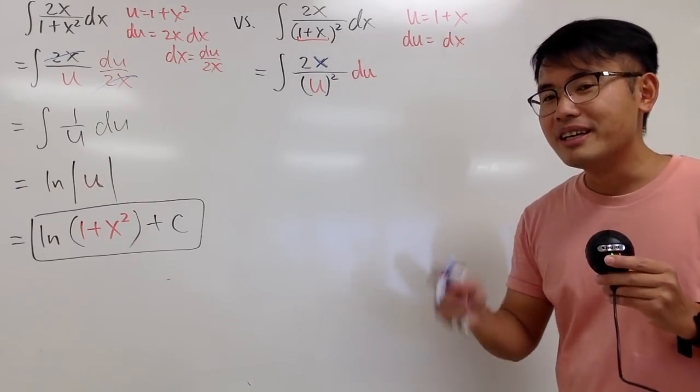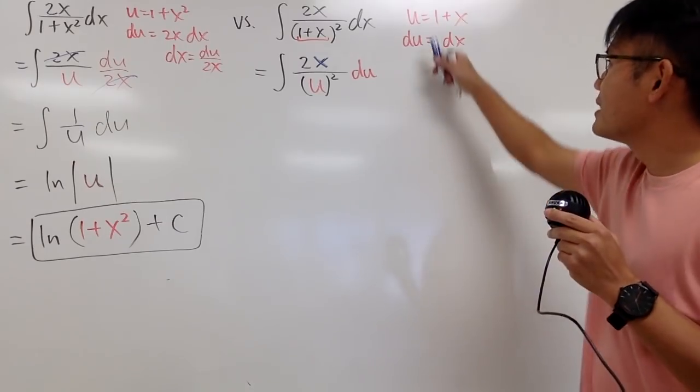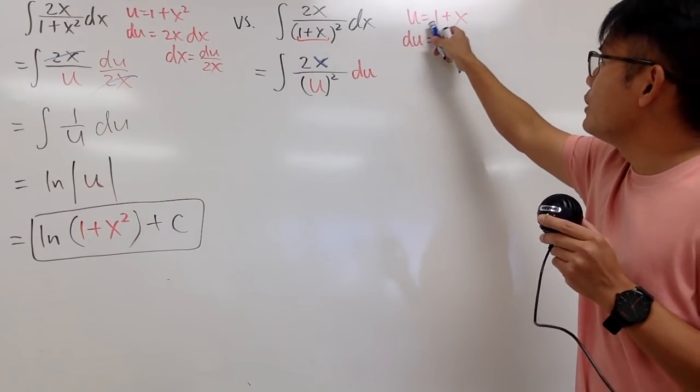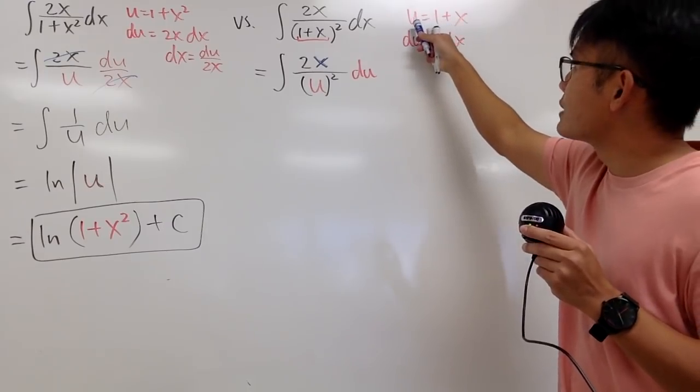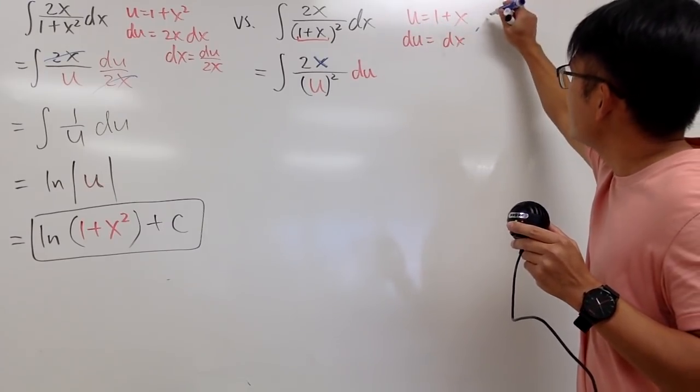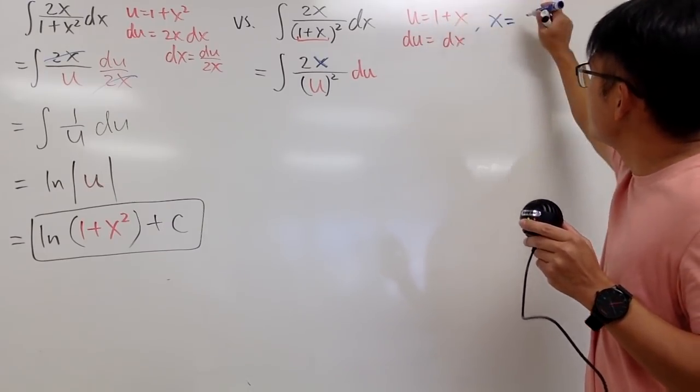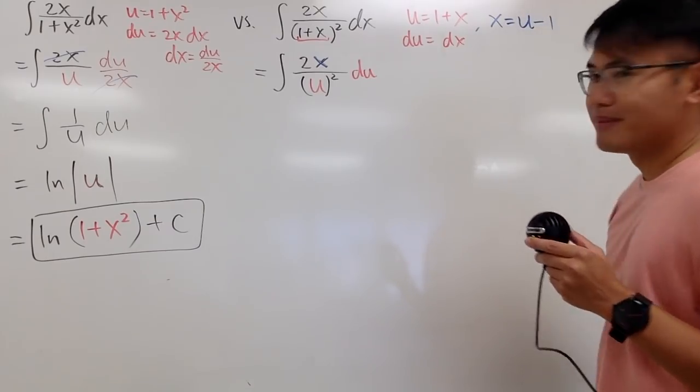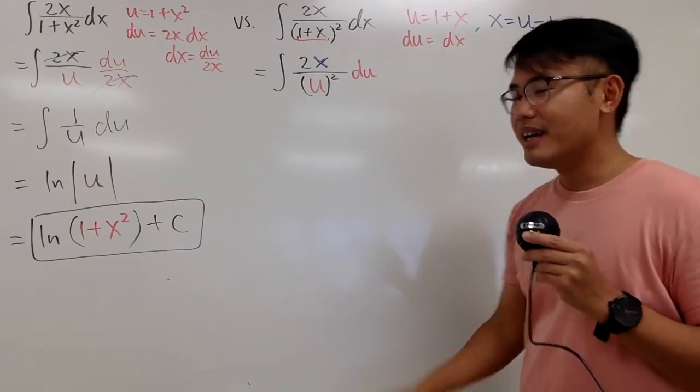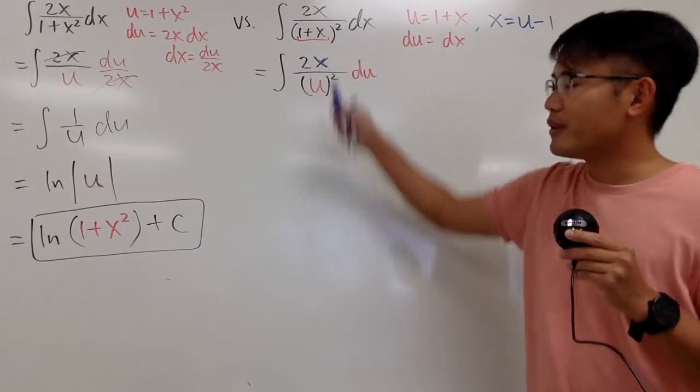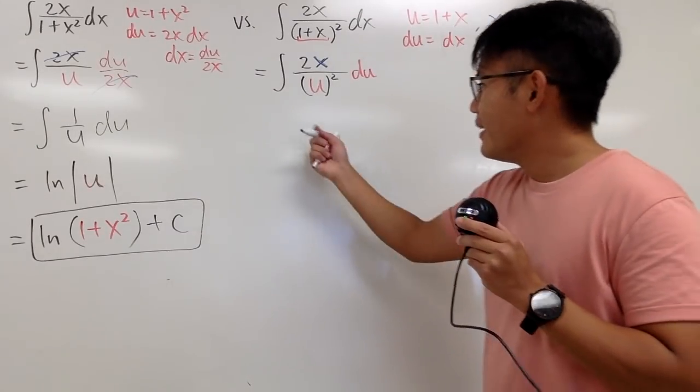However, in this situation, this right here is not that bad. Because you can look back to this. u is equal to 1 plus x. We can just subtract both sides by 1. So you can see that x is nothing but just u minus 1. So this is an easy fix. I'm going to plug in u minus 1 right here. And this is still going to work out nicely.